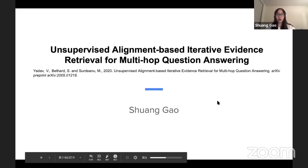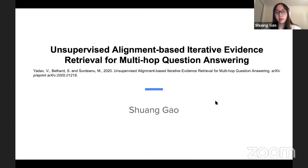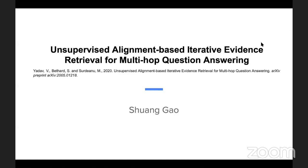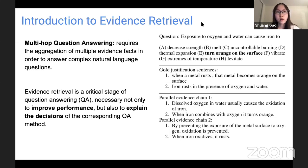Today the topic I would like to present is 'Unsupervised Alignment-Based Iterative Evidence Retrieval for Multi-Hop Question Answering.' Let's start with the definition of the problem we want to resolve. What is multi-hop question answering? To answer a question, we need to reason through multiple pieces of evidence — we need an evidence chain to get the correct answer.